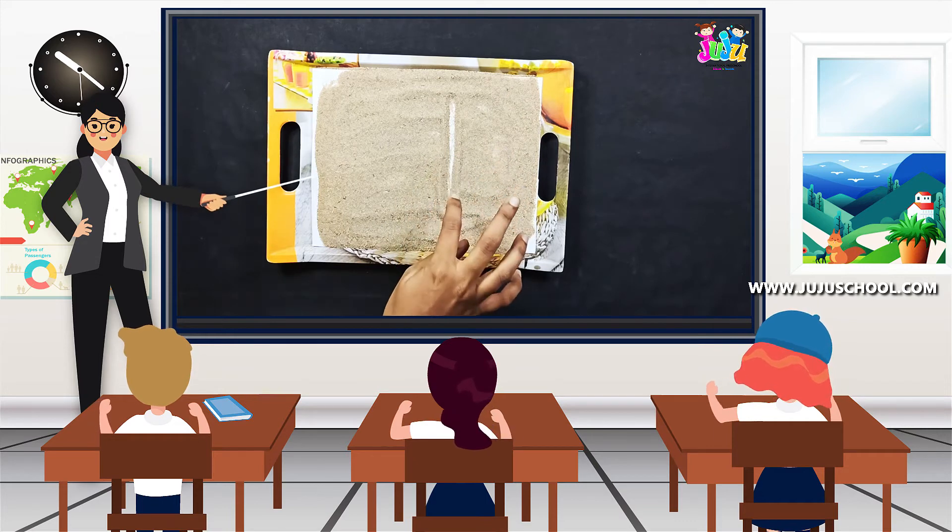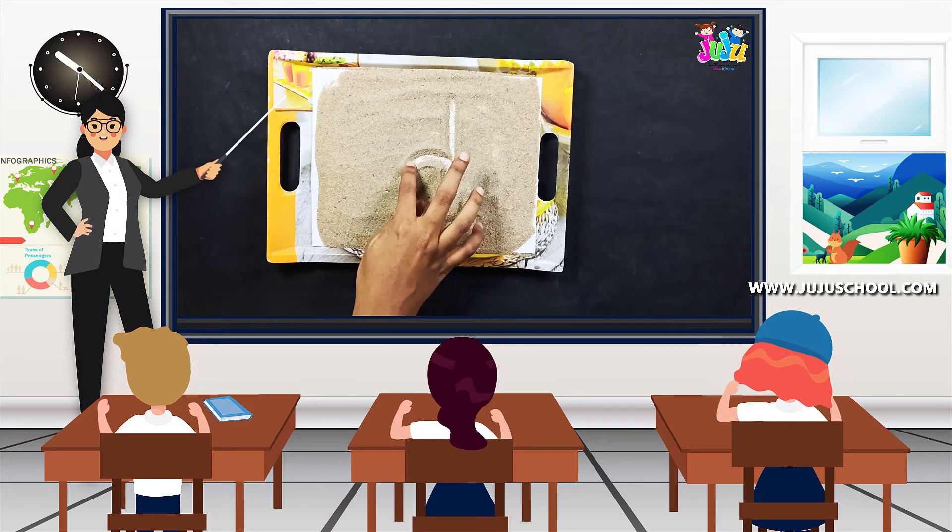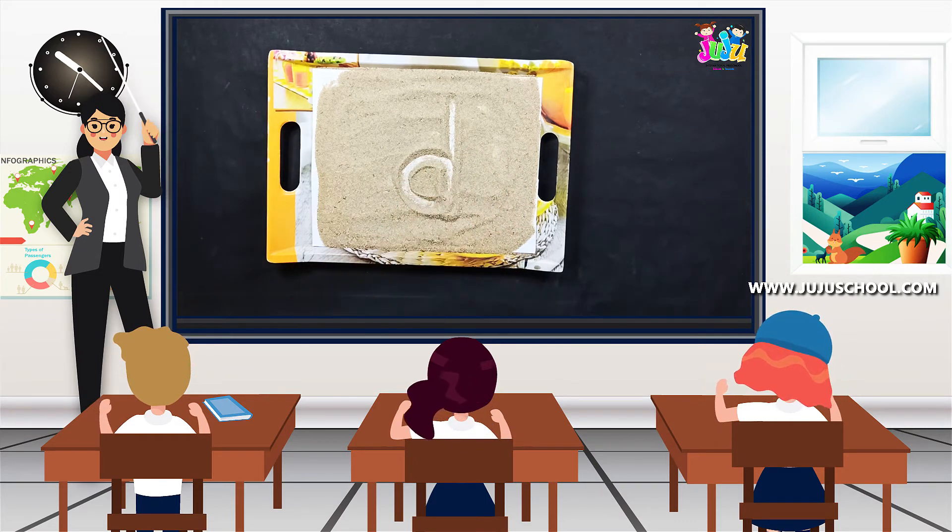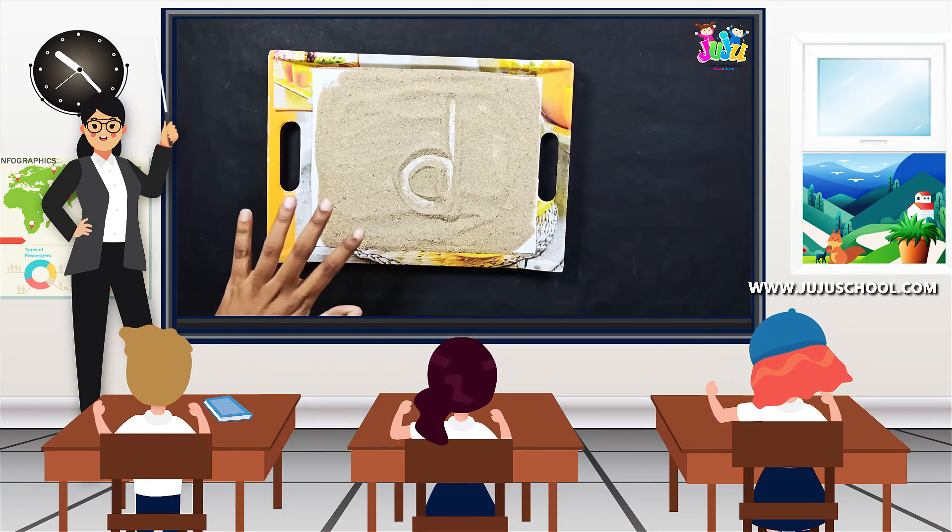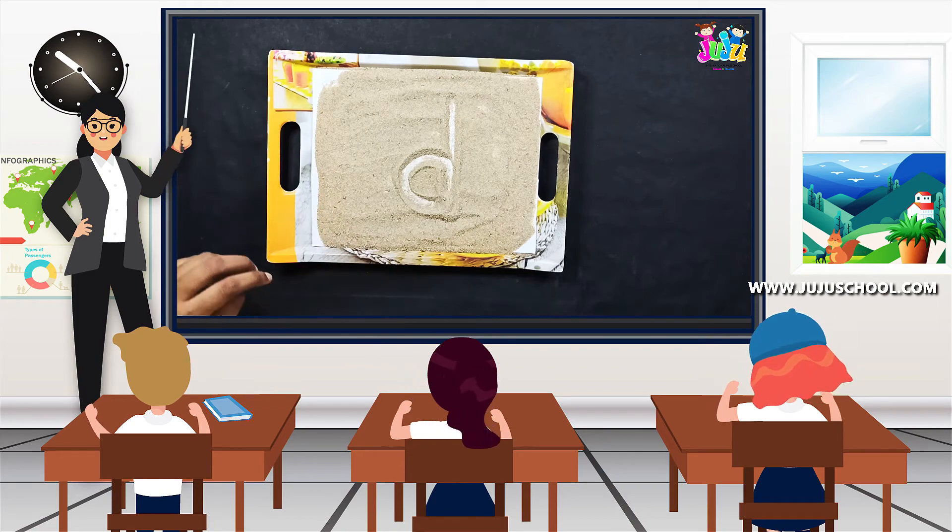A straight standing line and a small right curve. So this is lowercase d. What is it? Lowercase d.